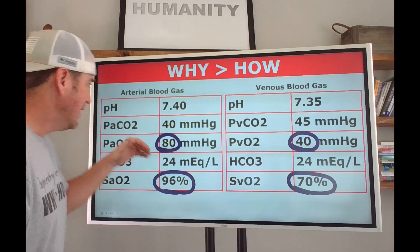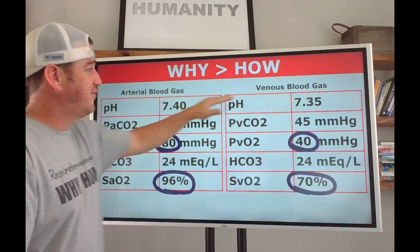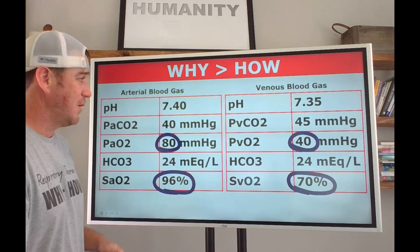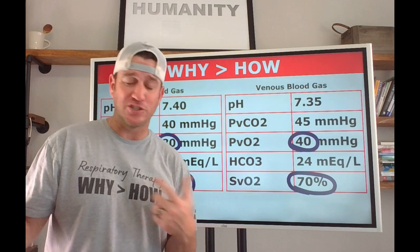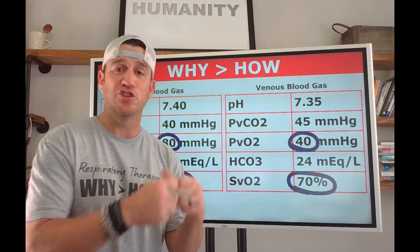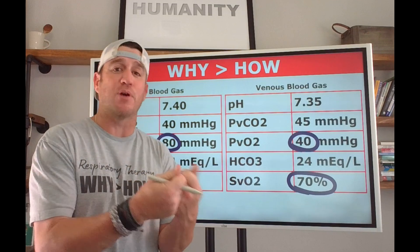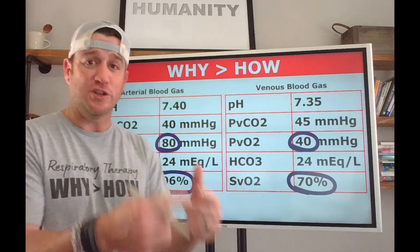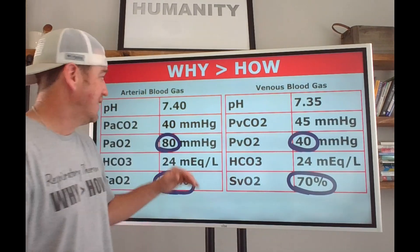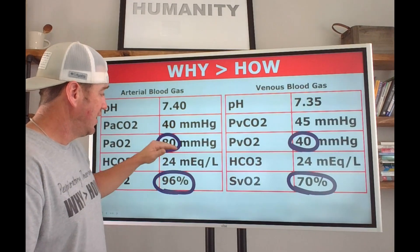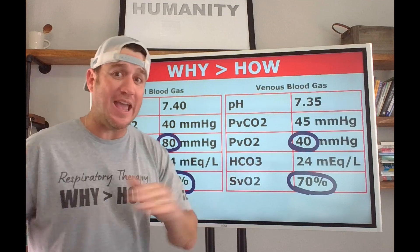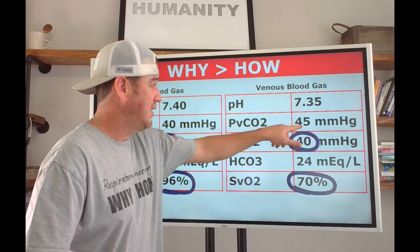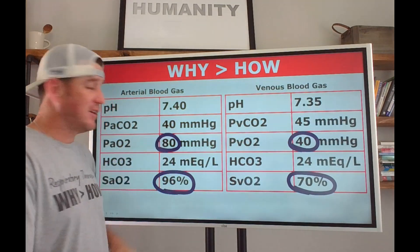Looking at the other values: the pH values are different, but venous blood is always slightly more acidotic than arterial blood. Why? Because the tissues consume oxygen and the byproduct of oxygen consumption is CO2. So the tissues consume the arterial oxygen and create more CO2 — that's why your PvCO2 is slightly higher than your arterial CO2.